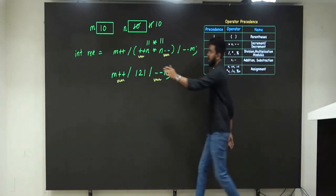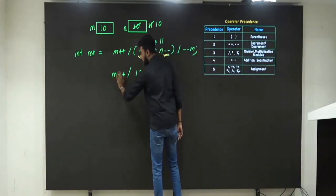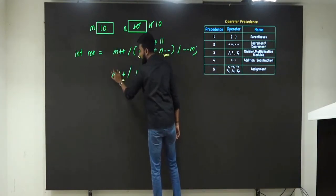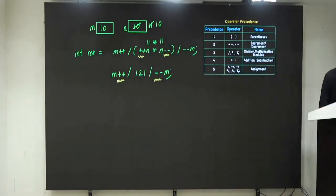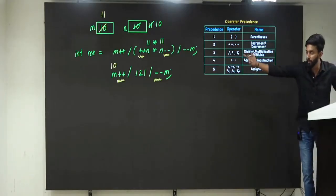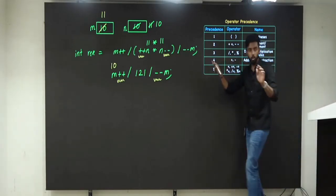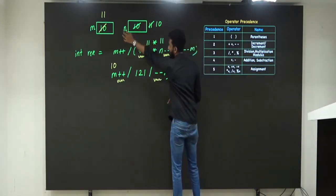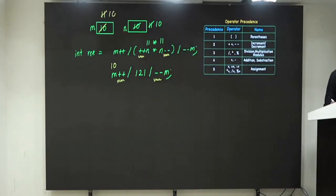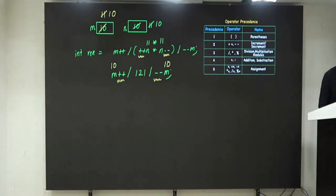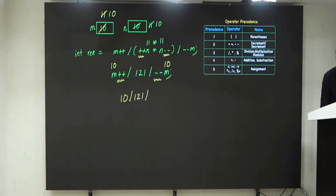m++ — pre or post? Post — first use, then increment. The value of m is 10, so we use 10, then m becomes 11. --m — pre or post? Pre — first decrement, then use. M is currently 11, so first decrement to 10, then use 10. The expression simplifies to: 10 / 121 / 10.